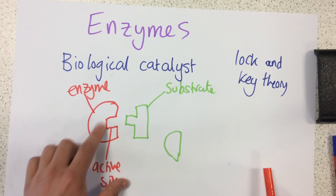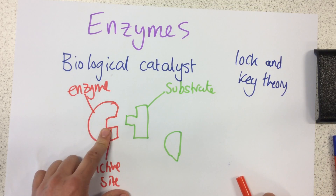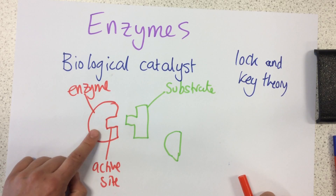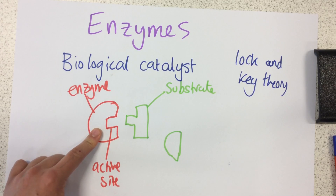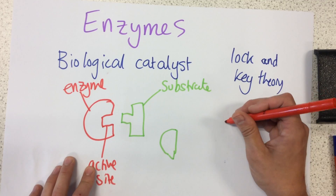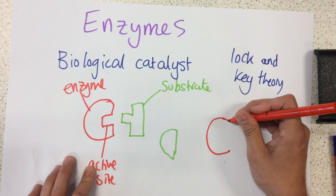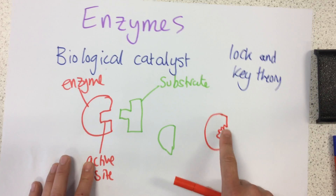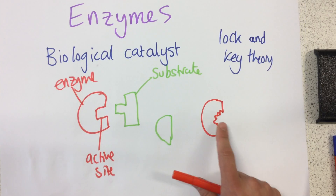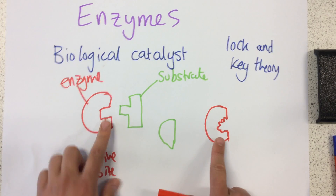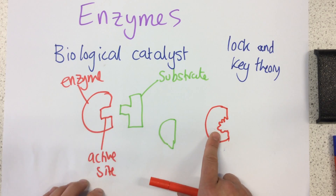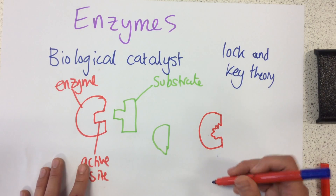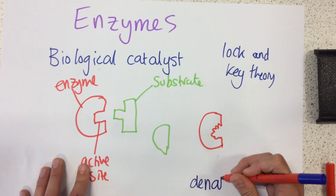Enzymes can also undergo changes. If we heat up the enzyme and it gets far too hot, it can actually denature. Denaturing is when it gets so hot that the shape of the active site changes. As we can see, this is the same enzyme but the active site has changed shape — that process is called denaturing.